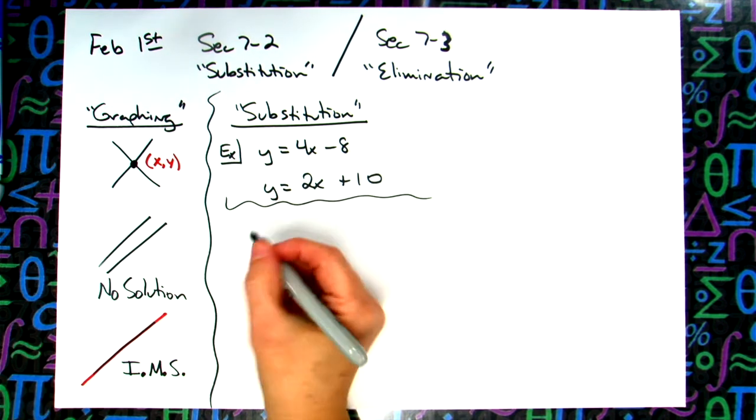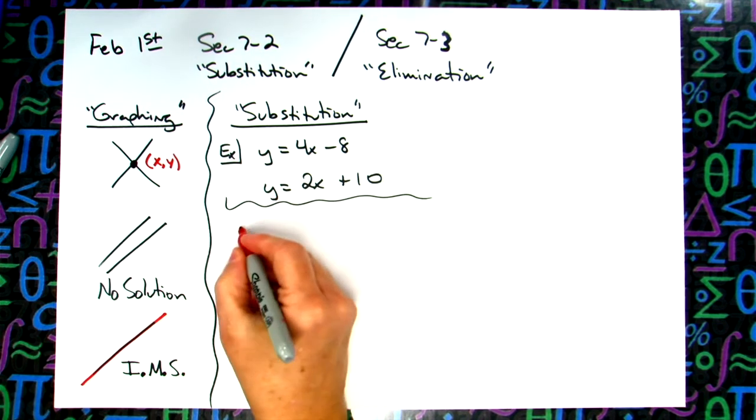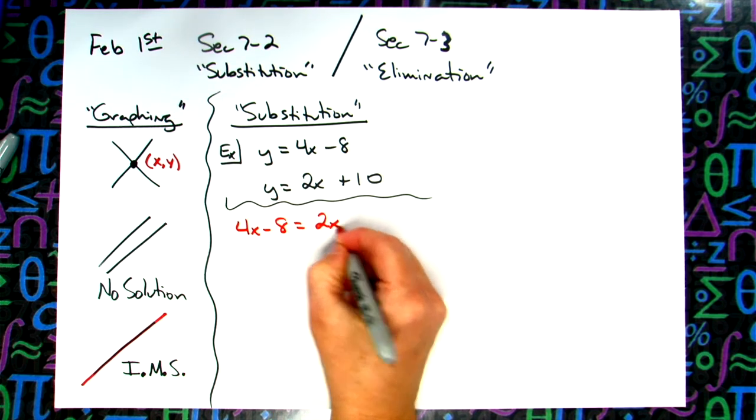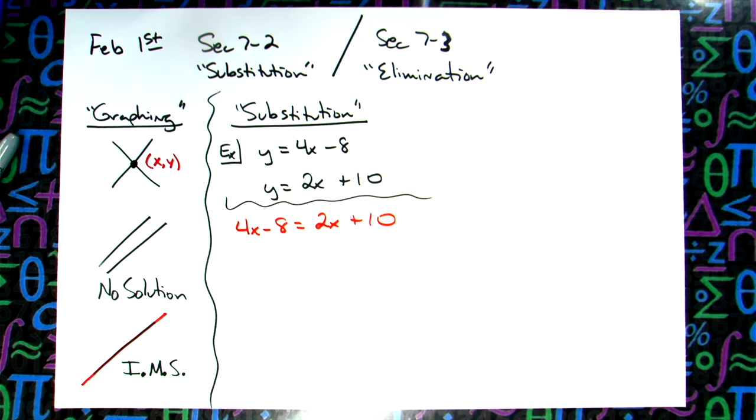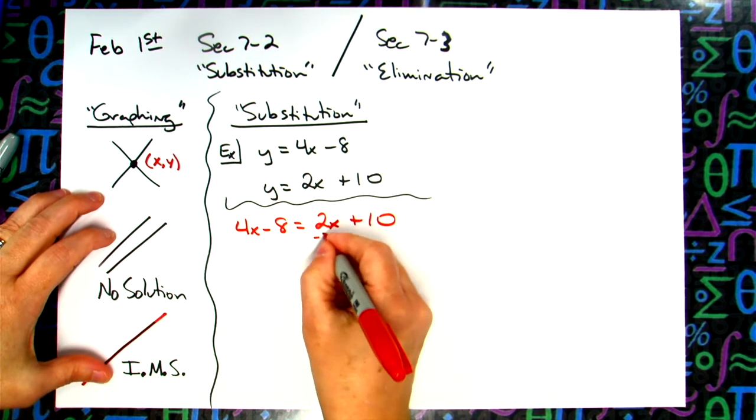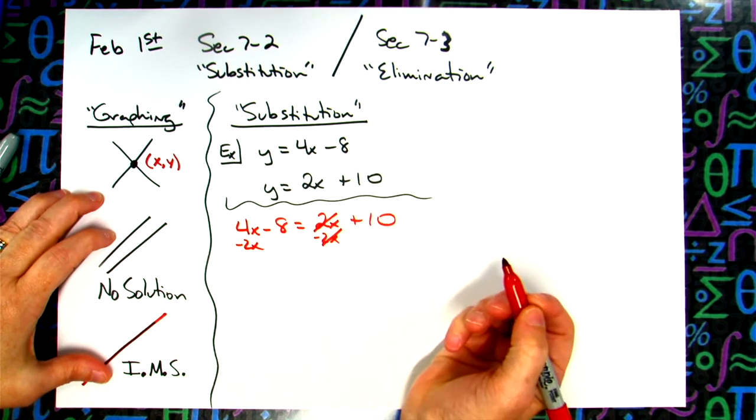So my equation that I would be working out would be 4x minus 8 is equal to 2x plus 10. But you have to understand conceptually what you're doing: I'm substituting those values. They both are equal to y so I can say they're equal to each other. Now everyone in the room should be able to at this point solve this equation. Move the letters to the left, move the numbers to the right. So subtract 2x.